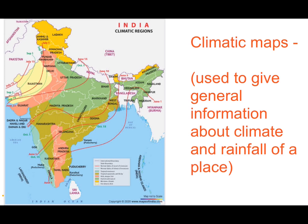And the last type is climatic maps. General information about climate and rainfall of a place is shown in climatic maps. Besides these, there are maps that tell us about industries, population, transport, minerals, crops, soils, wildlife and many more.